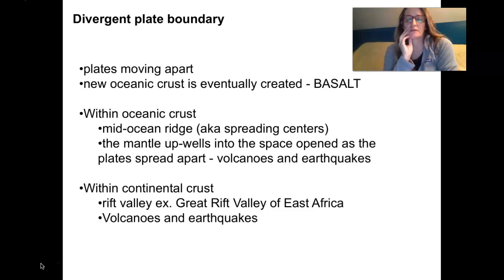Just to review, divergent plate boundaries are creating basalt. Remember, the divergent plate boundaries are in the middle of the ocean basin, so oceanic crust is basalt. The mantle comes up into that space and it's melting because of the decompression and forming new basalt. An example is over there in the East African Rift Valley.